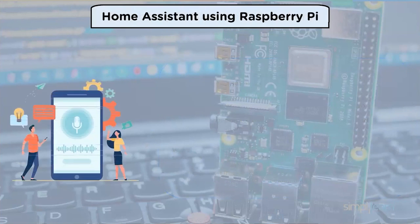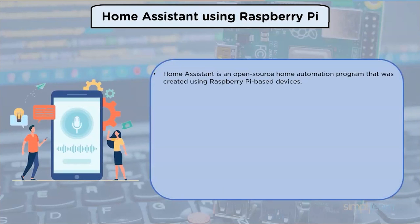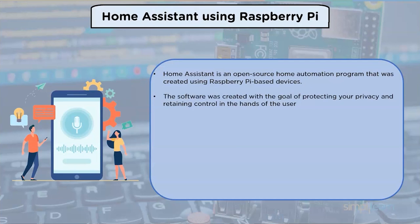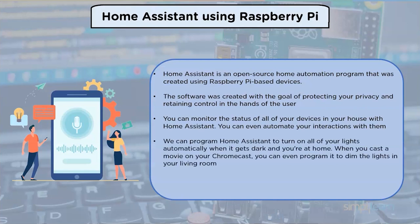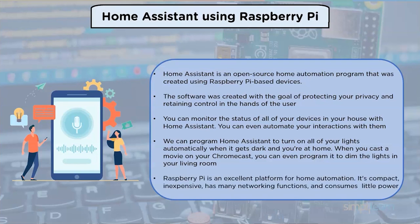Home Assistant using Raspberry Pi: Home Assistant is an open-source home automation program created using a Raspberry Pi-based device. The software was created to protect privacy and retain control in the hands of the user. You can monitor the status of all devices in your house and even automate interactions with them — for example, turning on lights automatically when it gets dark, or dimming the lights when you cast a movie on your Chromecast.